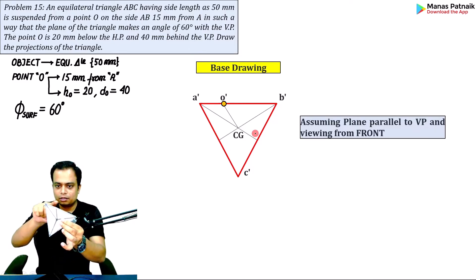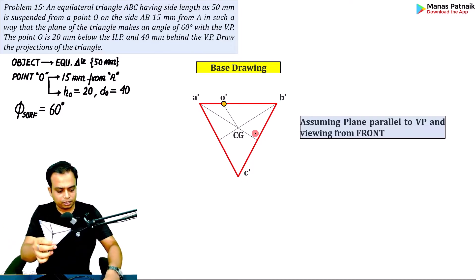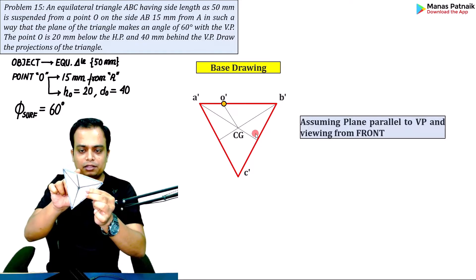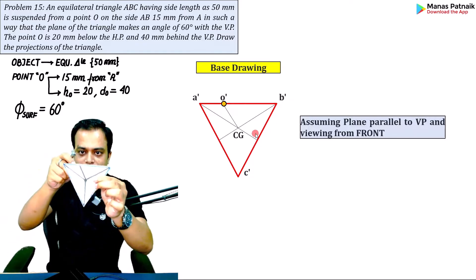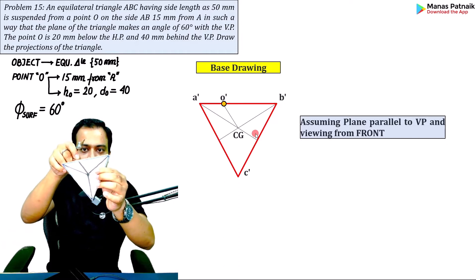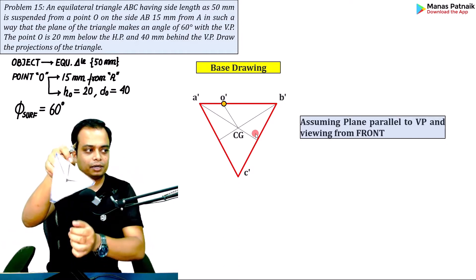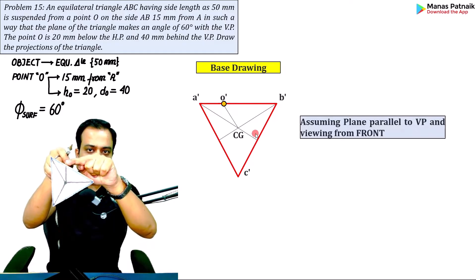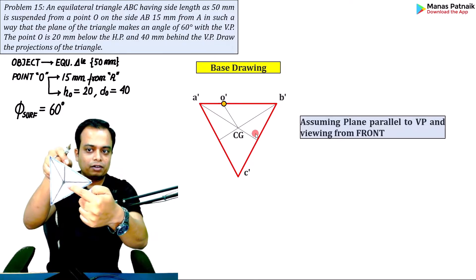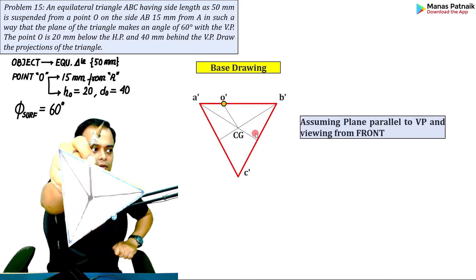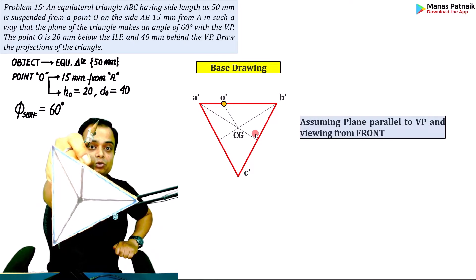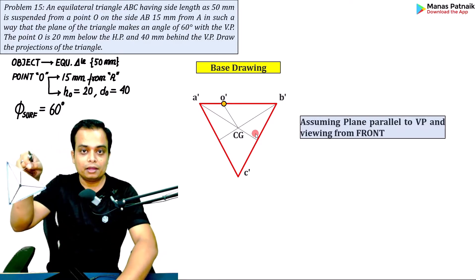Mark point O at 15 mm from A on side AB. Join O with the center of gravity. When you suspend the triangle from point O, the line connecting the point of suspension O and the center of gravity becomes absolutely vertical. That is the initial position, and on the drawing sheet it should look accordingly.